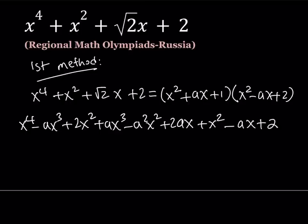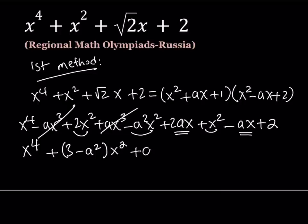Let's simplify this. x^3 cancels out. That was expected. Now we have x^4, two x^2, this is three x^2, and then I subtract a^2x^2. So it's going to look like this. And then I should look at the x terms: 2ax - ax is just ax. And then I have +2 at the end.